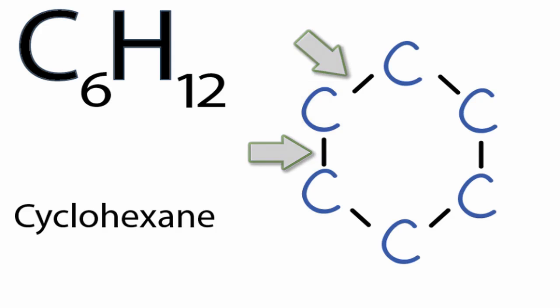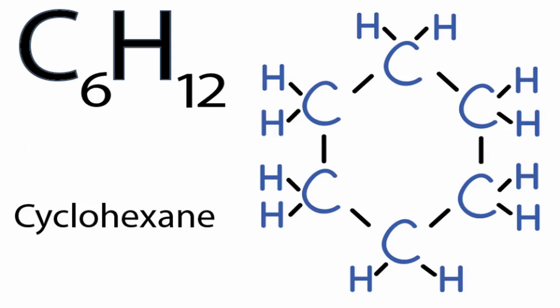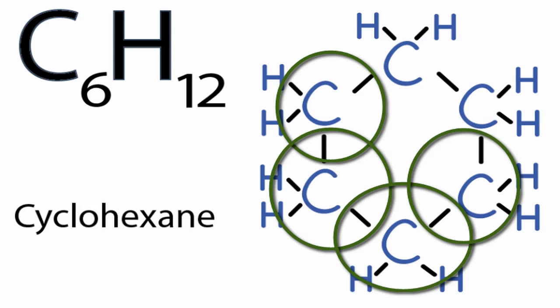They need eight to have a full outer shell, so we need to put these 12 hydrogens around. We're going to put two hydrogens on each carbon. Now we've added in all 12 hydrogens around these six carbons, and you can see that each carbon has four bonds, giving each carbon eight valence electrons.